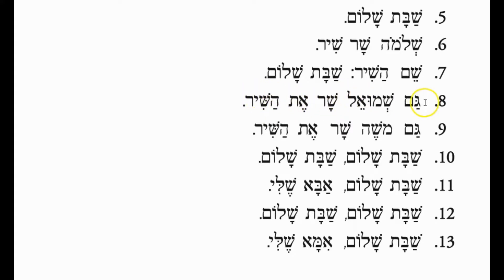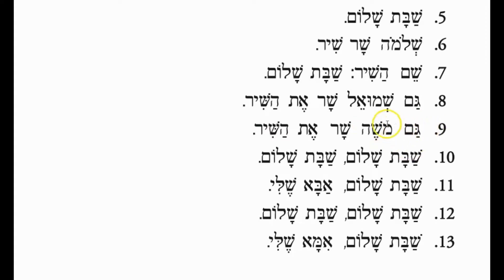Also Gam — Samuel sings the song. Line 9: Gam Moshe Shar Et HaShir — also Moses sings the song. Line 10: Shabbat Shalom, Shabbat Shalom.